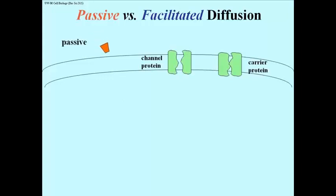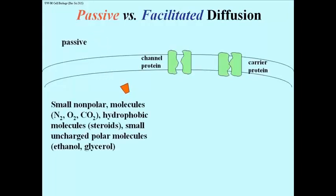Passive diffusion is simply the movement of a molecule directly across the phospholipid bilayer. This kind of passive diffusion is limited to small non-polar molecules like the gases nitrogen, oxygen, and carbon dioxide, hydrophobic molecules such as steroids which do not have trouble negotiating a hydrophobic fatty acid environment, as well as small uncharged but somewhat polar molecules like alcohol, that is ethanol and glycerol.